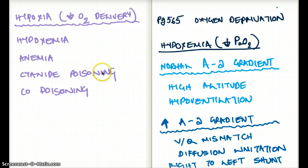Now, let's talk about hypoxia. Hypoxia is going to be anemia. It's also going to be decreased cardiac output, cyanide poisoning, carbon monoxide poisoning. This is going to fall under hypoxia rather than hypoxemia.